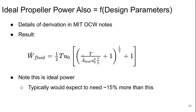Sorry, u_e over u_0 plus 1. So this is the ideal power. Typically you need about 15% more than this because of not having perfect efficiency of the propeller itself.